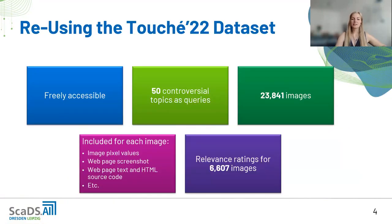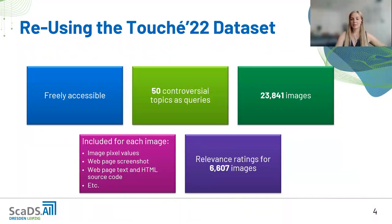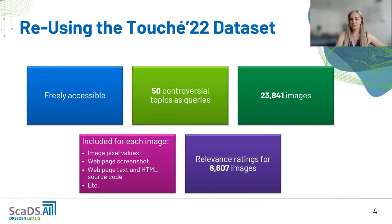We are reusing the Touche 22 dataset — it is freely accessible, includes 50 controversial topics as queries, and almost 24,000 images. For each image there are pixel values, the web page screenshot, the web page text and HTML source code, and other information. For almost 7,000 of these images we also get relevance ratings, and these are the images we are using for our project.